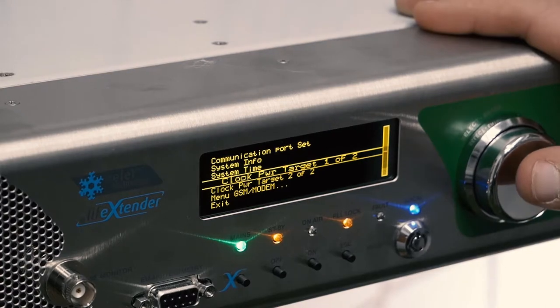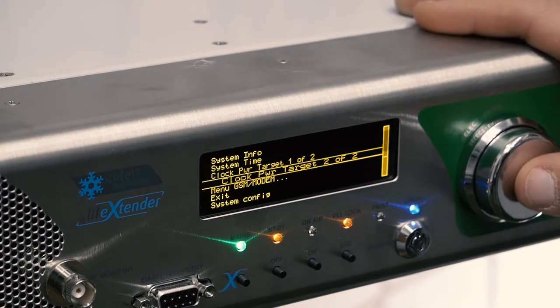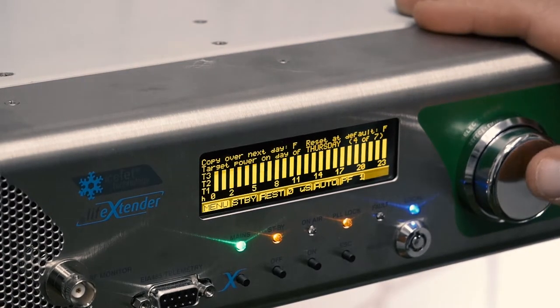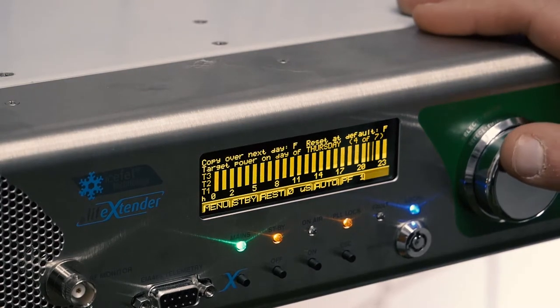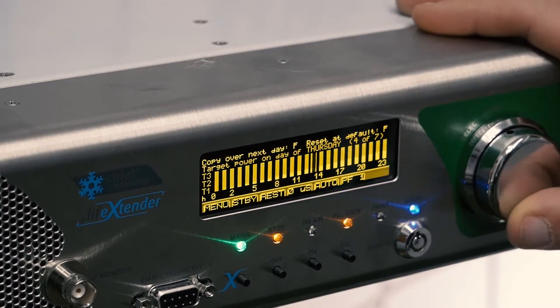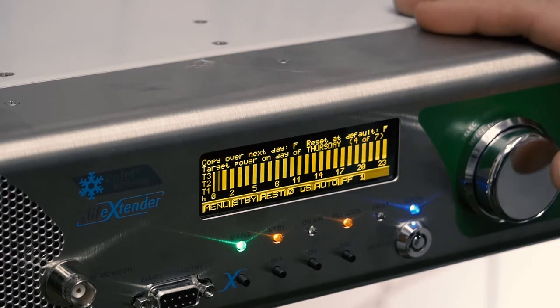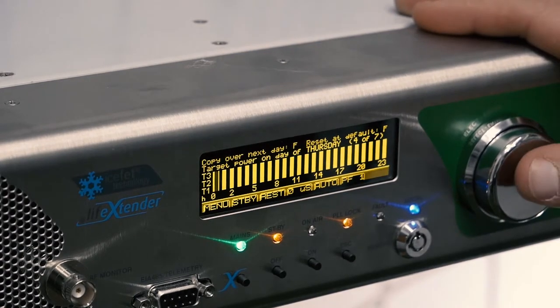Then you can go to Clock Power Target, two of two, where you can see your T0, T1, T2, T3 and the hours of the day.